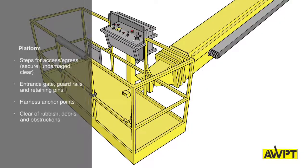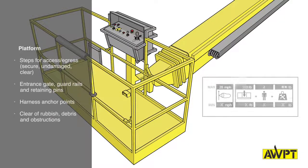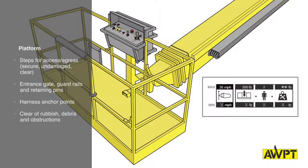Next, we'll move to the basket. Now the basket should not show signs of structural damage or have any cracked welds. Make sure to look closely at the decals to see that they're clear and readable and confirm the safe working load, maximum number of persons allowed in the basket and the safe wind speed.